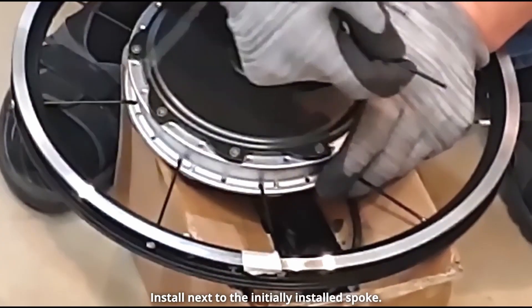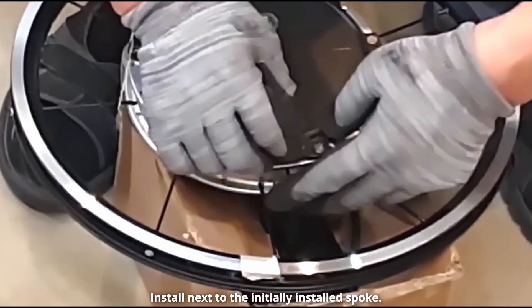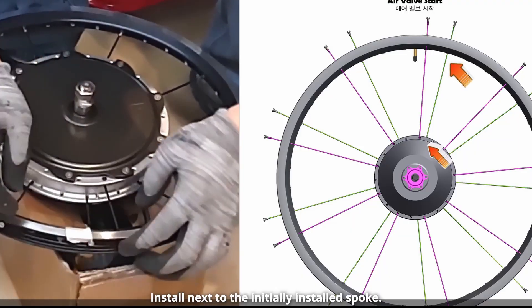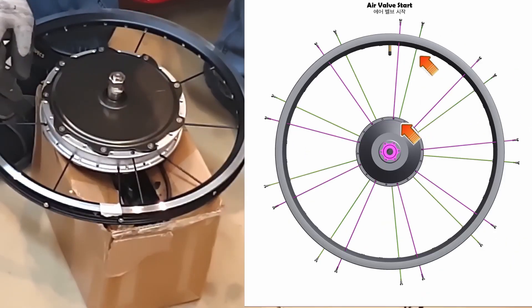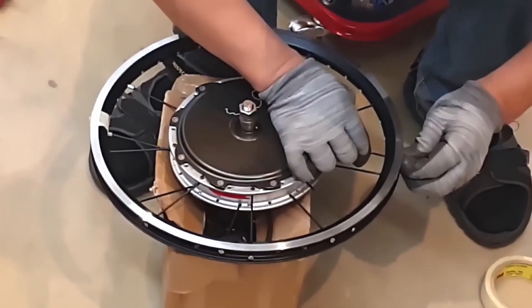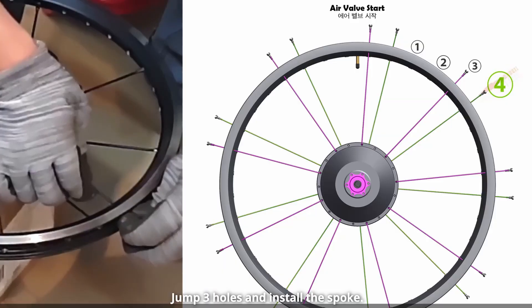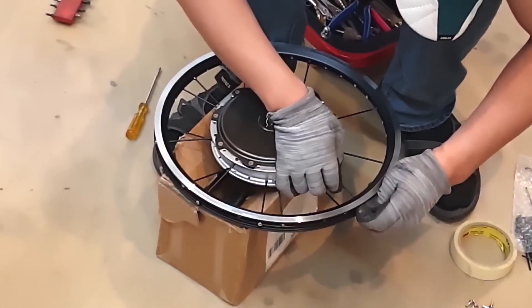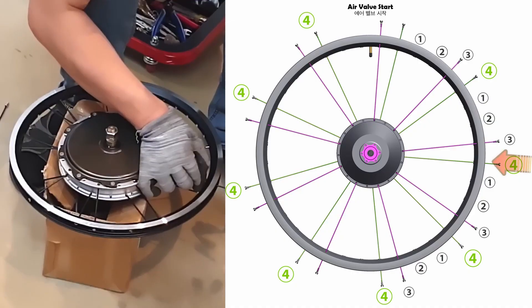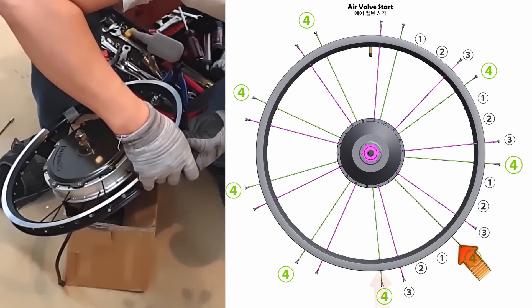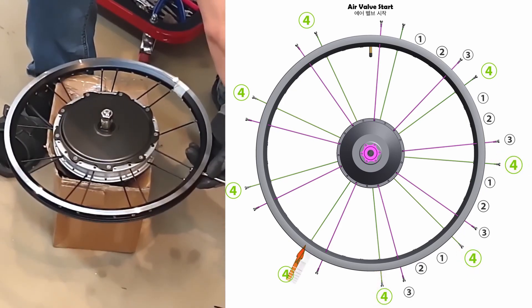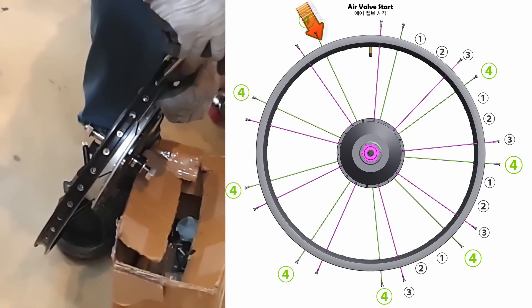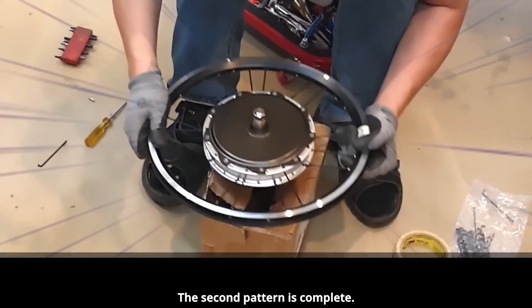Install next to the initially installed spoke. Jump three holes and install the spoke. The second pattern is complete.